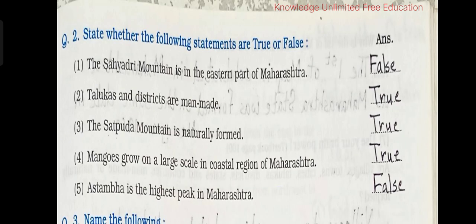Let's see the next question. State whether the following statements are true or false. 1. The Sahyadri mountain is in the eastern part of Maharashtra — the answer is false. 2. Talukas and districts are man-made — the answer is true.